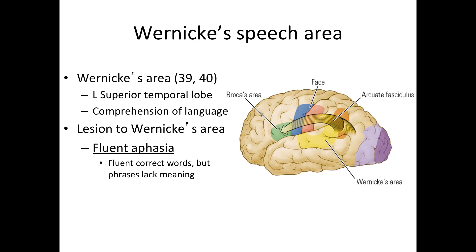Damage or lesion to Wernicke's area results in fluent aphasia. A person with fluent aphasia can fluently connect words, but the phrases or sentences will lack meaning — the words are correct but the sentence does not make sense. For example, a person might say: 'You know that dog played and that I need to wash clothes while I see you next week' — the words are correct but strung together make no sense.